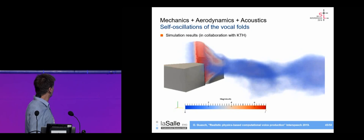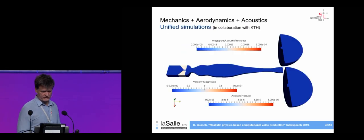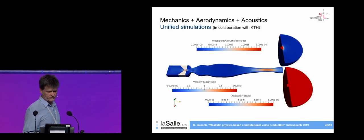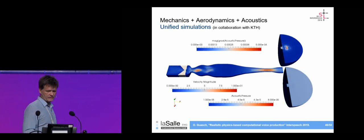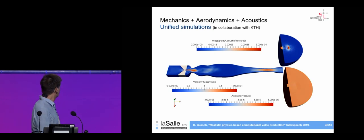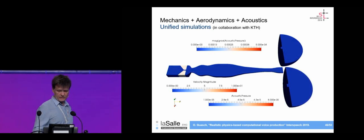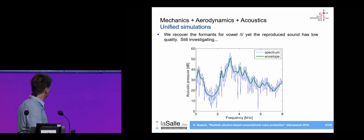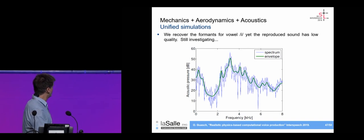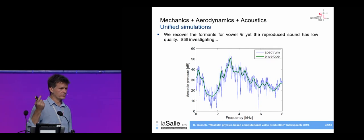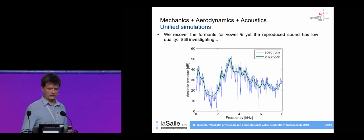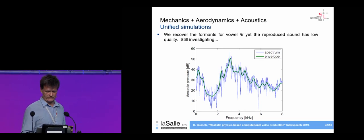We also attempted a unified simulation with the vocal tract to generate the vowel /i/, obtaining both velocity and acoustic pressure fields. However, the output signal is quite noisy — we recover the formant envelope of the vowel but the audio quality is poor. Our assessment is that the contact model was not accurate enough, and there are several remaining issues to resolve.